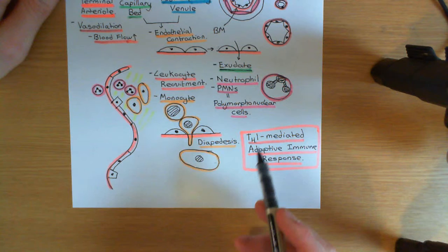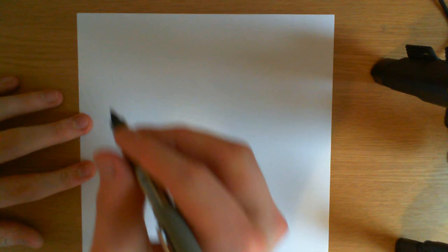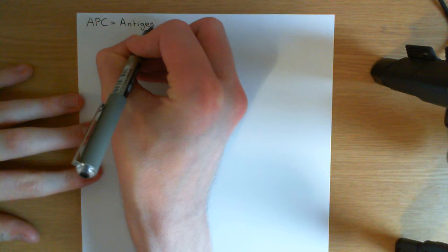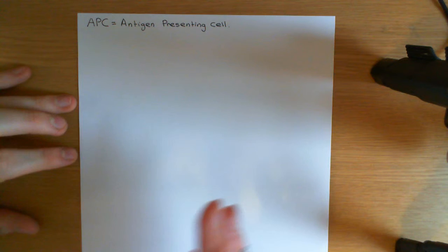We just had an inflammatory response to tuberculosis and discussed that this inflammatory response isn't really going to bring the tuberculosis infection under control. Instead, what we're going to have to initiate is a T helper 1 mediated adaptive immune response, and this is what's going to bring the mycobacterium tuberculosis infection under control. Whenever you're initiating a T cell adaptive immune response, it always begins with antigen presentation by an antigen presenting cell.